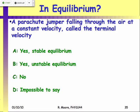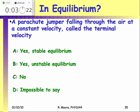Here's one to consider: a parachute jumper falling through the air with a parachute, falling at a constant velocity called terminal velocity. Is this stable equilibrium, unstable equilibrium, not equilibrium at all, or is there not enough information to know?